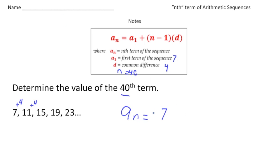Alright, 7 plus - so our n is going to be 40, and then minus 1 - times our common difference, which is going to be 4. So that's now going to be 7 plus 39 times 4. And when I do 39 times 4 and then add 7, I get 163.